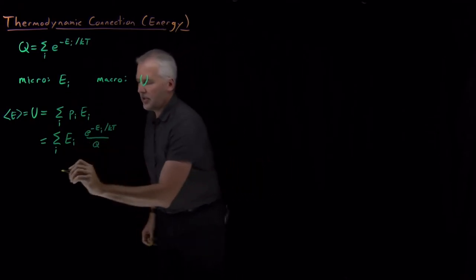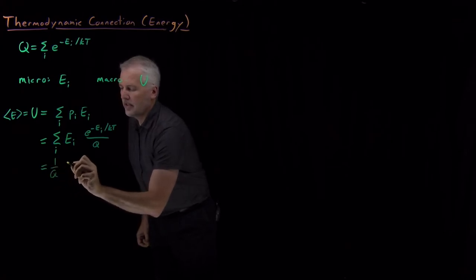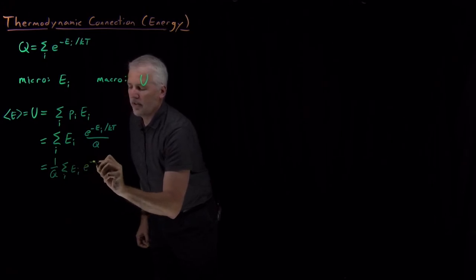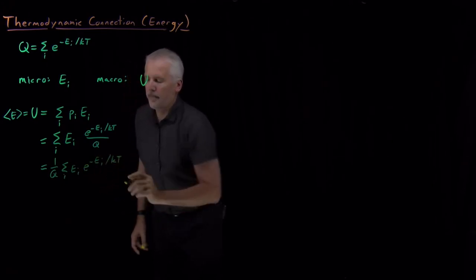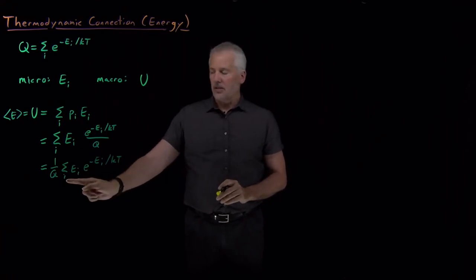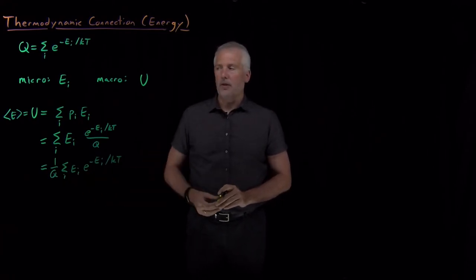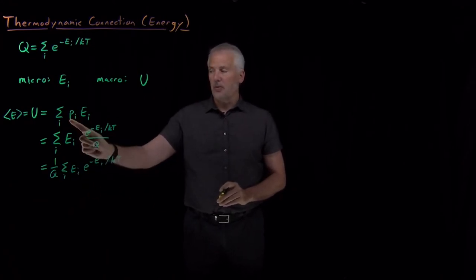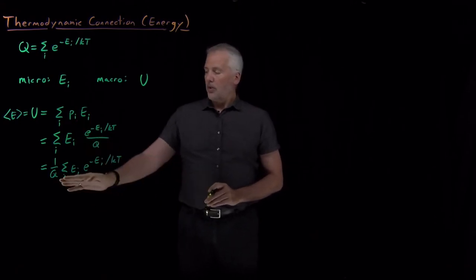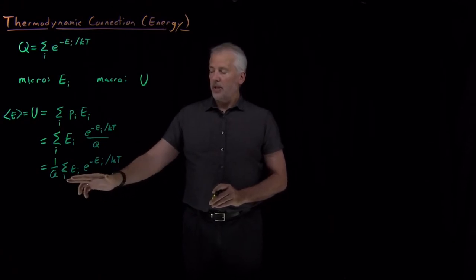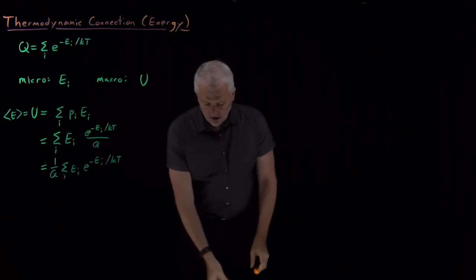Q is just a number. If I pull that q out of the sum, we see that the sum we need to calculate is the sum of the energies multiplied by the Boltzmann factors. This is a slightly different sum than we've seen so far — it's not a sum of the Boltzmann factors, it's a sum of energies times the Boltzmann factors, because we're calculating probabilities times these energies. This turns out to be interesting, and we can simplify it a little bit with a trick.